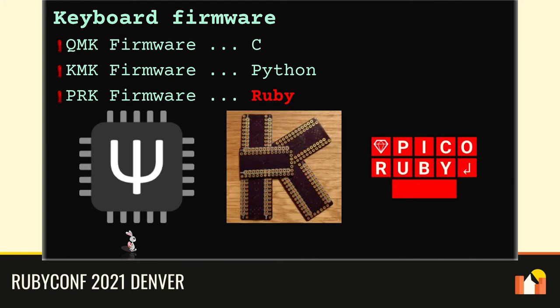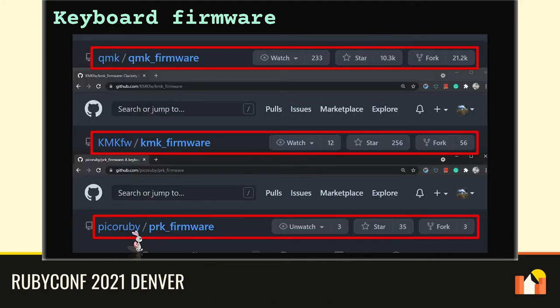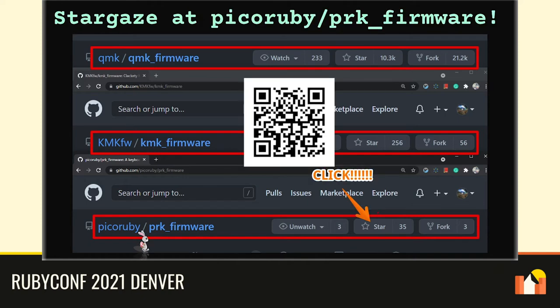You have to use one of the firmware when you build a keyboard. I list three of them here. QMK is the most famous one — it's written in C and you have to write C in order to define your key map. KMK is a recent product and CircuitPython based. PRK firmware is an alternative modern firmware platform that I released this year. PRK firmware has still few stars, so I'd like you to support it by clicking star on the PRK firmware repository.